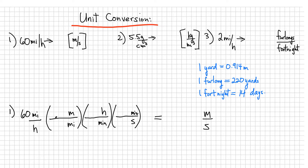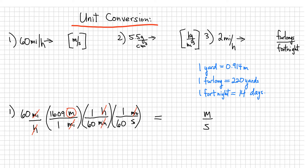Now I fill out the brackets. In one mile there are approximately 1,609 meters. In one hour there are 60 minutes, and in one minute there are 60 seconds. Miles cancel with miles, hours cancel with hours, minutes cancel with minutes, and all I'm left with are meters and seconds. You carry out the multiplication and divide — you should get 26.8 meters per second. This conversion is useful for kinematics and car problems, since 60 miles per hour is a typical car speed.